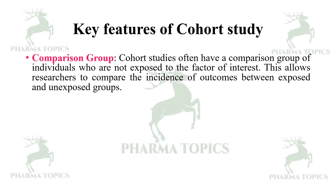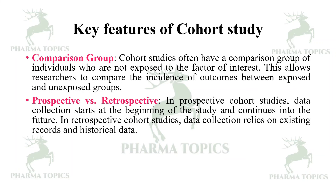Comparison group: cohort studies often have a comparison group of individuals who are not exposed to the factor of interest. This allows researchers to compare the incidence of outcomes between the exposed and unexposed groups. In prospective cohort studies, data collection starts at the beginning of the study; in retrospective cohort studies, data collection relies on existing records and historical data.